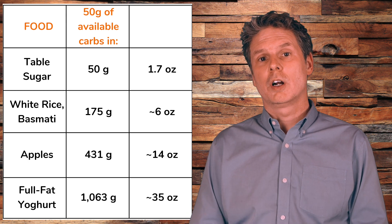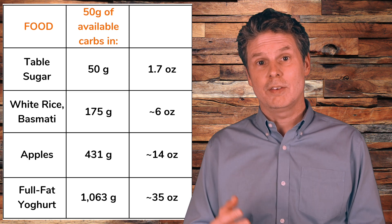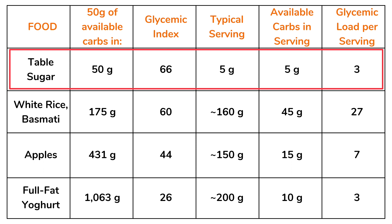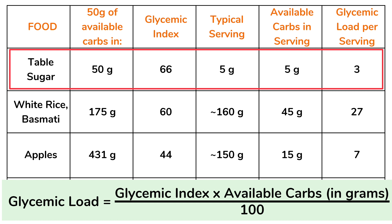To take the differences in carbohydrate content of foods into consideration, researchers developed the glycemic load. In simple terms, the glycemic load is the product of the glycemic index of a food and the grams of available carbohydrates in that food, divided by 100 to make the numbers smaller. Table sugar has a glycemic index of 66. A typical serving of table sugar is 1 teaspoon, about 5 grams, containing 5 grams of available carbohydrates — so the glycemic load of 1 teaspoon of table sugar is 3.